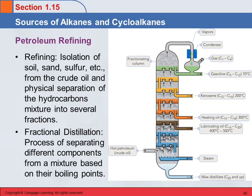So where do alkanes and cycloalkanes come from? How do we get them? One source of them is petroleum. These are fossil fuels like crude oil, and they contain all kinds of different organic chemicals. They came from living matter at some time.